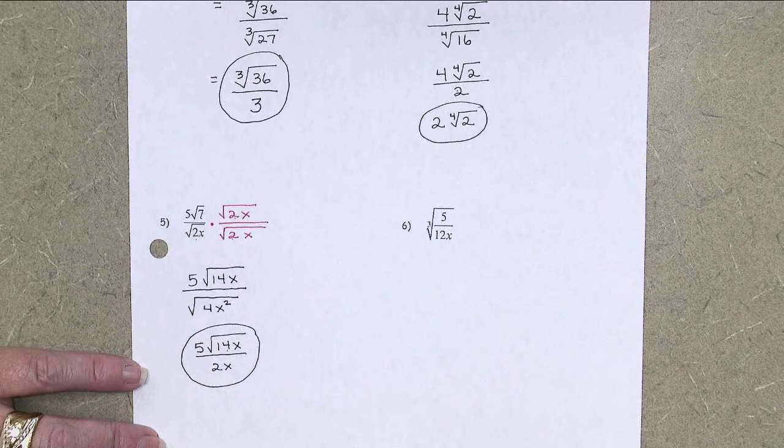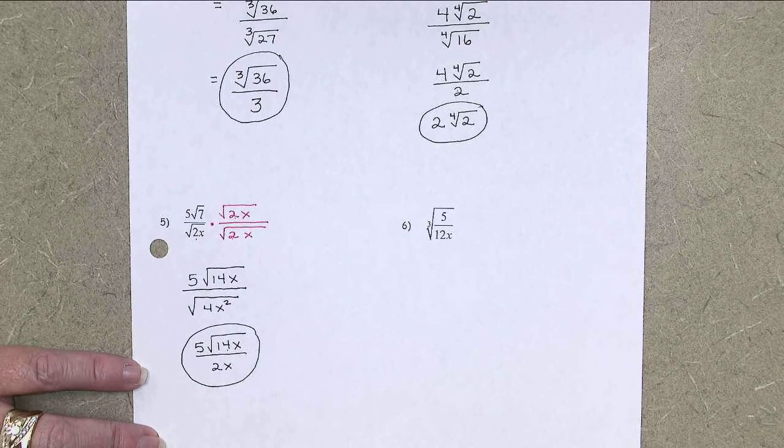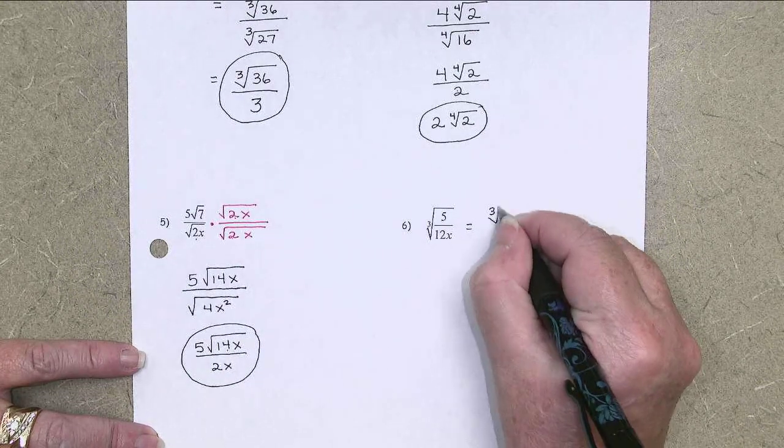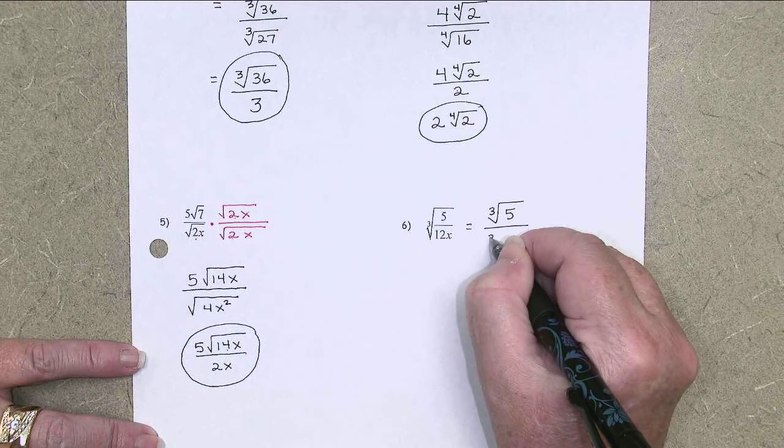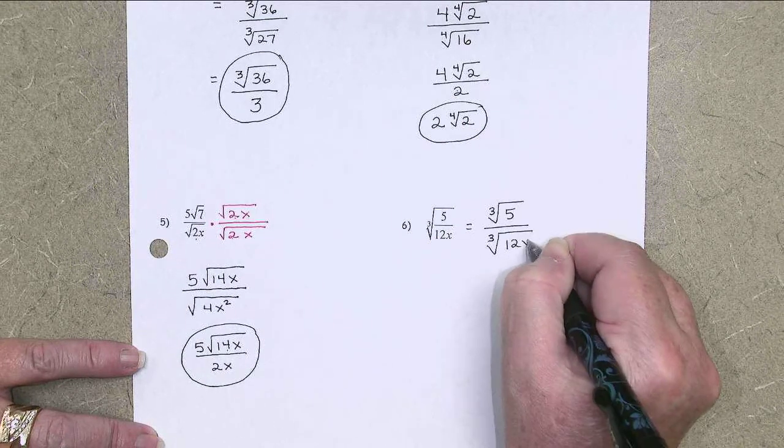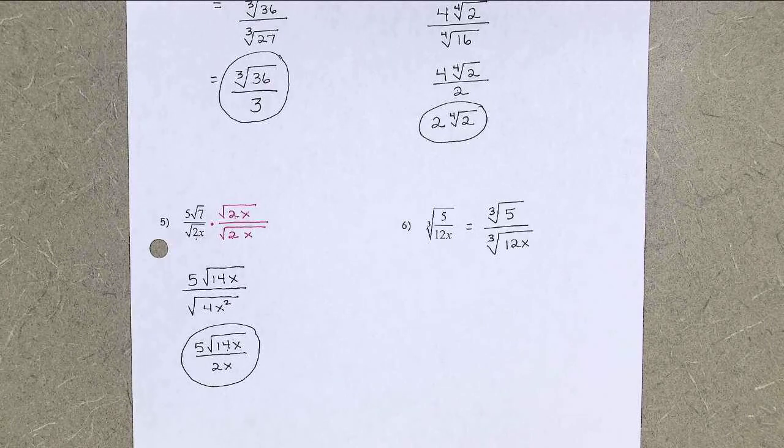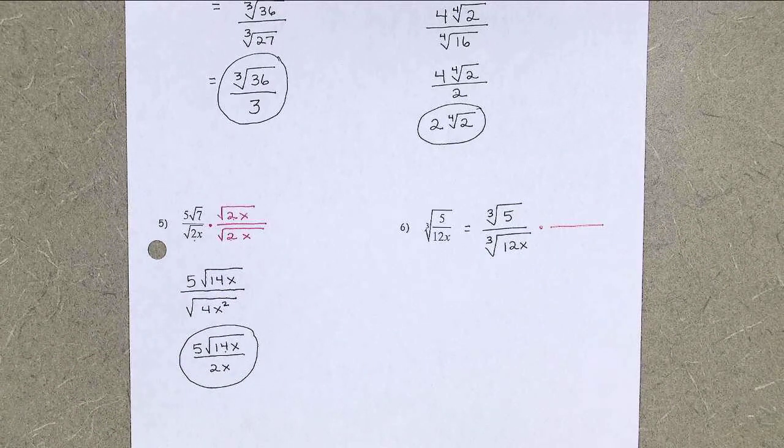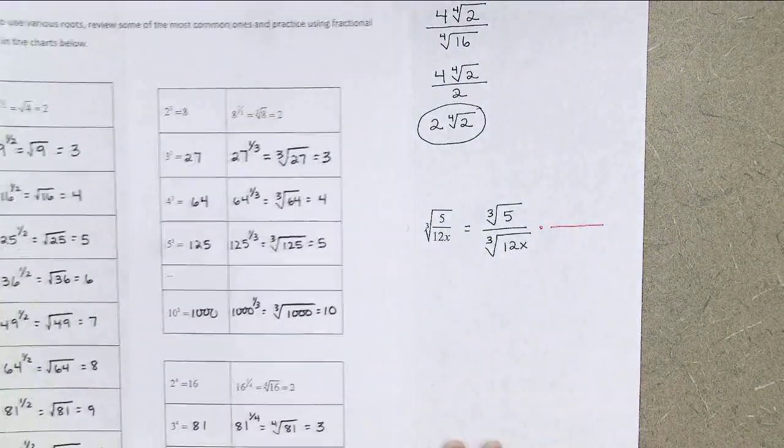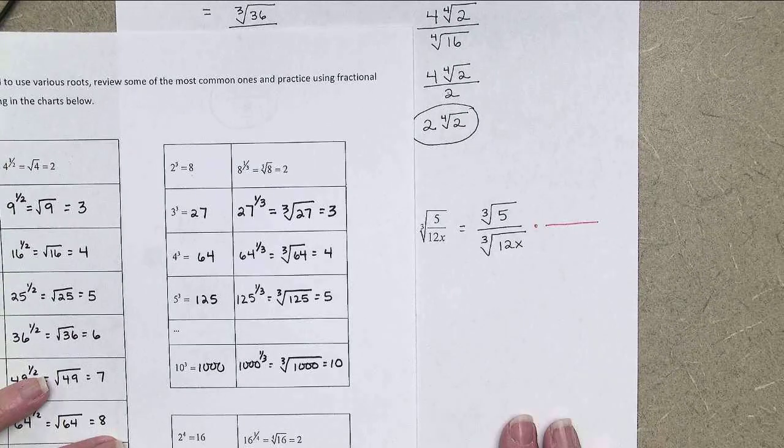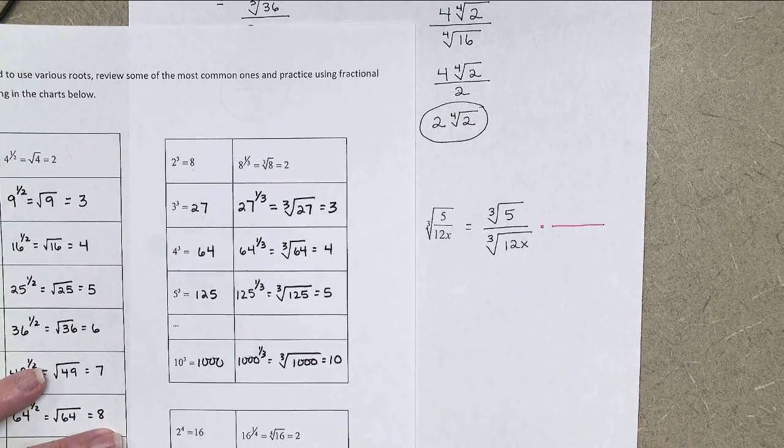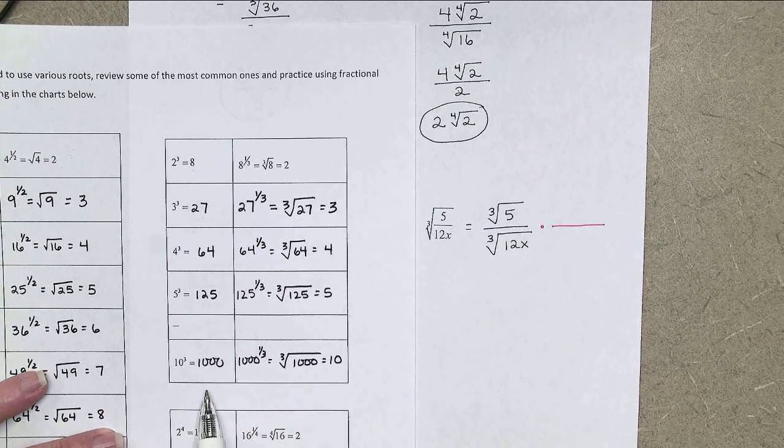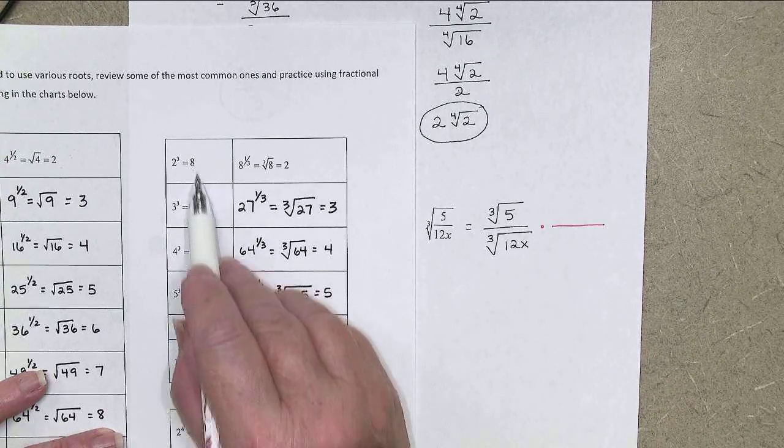One last example. I have the cube root of 5 over 12x. Nothing can be reduced there, so let's start right out by separating into the cube root of 5 over the cube root of 12x. I need that denominator to come out evenly. So I'm going to once again get out my list of perfect cubes here. And let's see. I'm starting with a 12, and I need to turn it into a perfect cube. So what could I multiply 12 by to make it into one of those numbers?